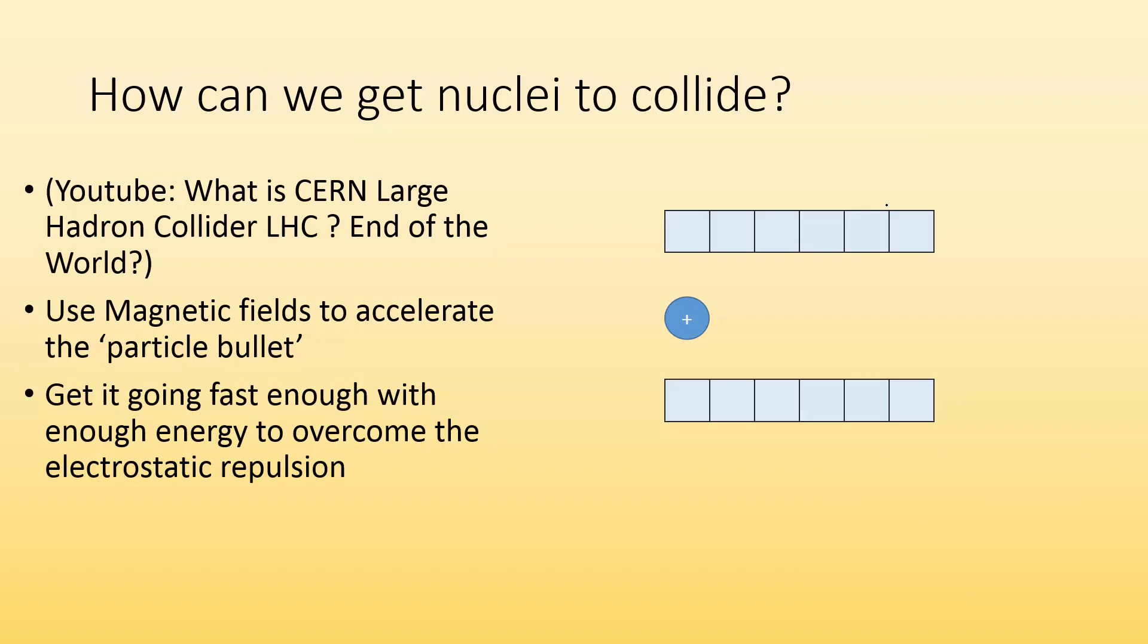How can we get nuclei to collide? If you go on YouTube and check out What is CERN Large Hadron Collider LHC End of the World, it's a good video that explains this. We can use magnetic fields to accelerate a particle bullet. The particle bullet has to have a charge so it interacts with the magnetic field.